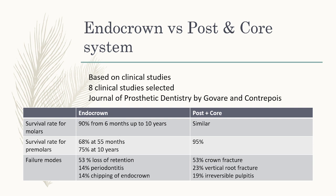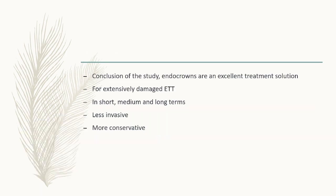Failure modes for endocrowns were: 53% loss of retention, 14% periapical periodontitis, and 14% chipping of the endocrown. For post and core, failure modes were 53% crown fracture, 23% vertical root fracture, and 19% irreversible pulpitis. As a conclusion, endocrowns are an excellent treatment solution for extensively damaged endo-treated teeth in short, medium, and long terms — less invasive and more conservative.